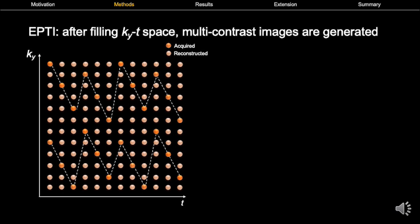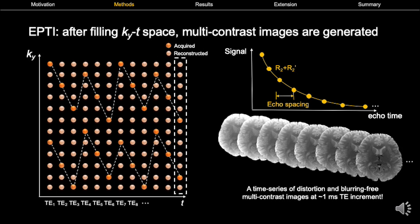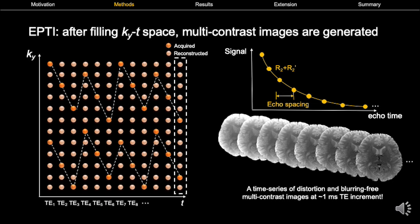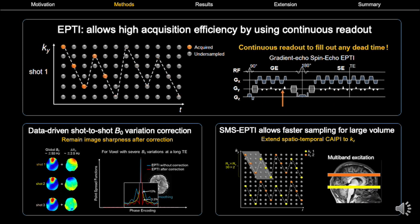This reconstruction nicely fills out the KYT space. By applying inverse Fourier transforms along phase and frequency encoding directions at each echo time, we can get more than a hundred distortion and blurring-free multi-contrast images at one millisecond TE increment. This sampling allows high acquisition efficiency by using continuous readout to fill out any dead time in the sequence. A data-driven shot-to-shot B0 variation correction was also developed to maintain image sharpness even with strong B0 inhomogeneity. We also extend EPTI to the slice direction by combining it with SMS for faster sampling of large volumes.